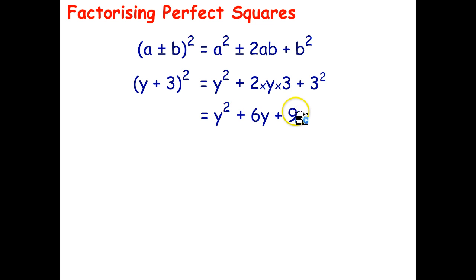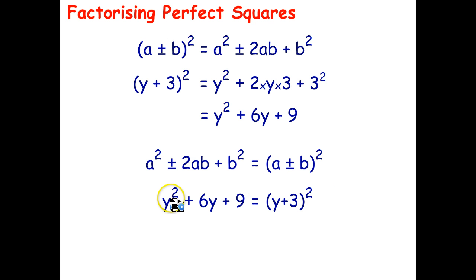So the question is, if we're given this expression here, how do we get it back to that? Well, what we have to do is start with that expression, which we have here, and turn it into the perfect square. So what we have to figure out is, if we're given the expression y squared plus 6y plus 9, how do we then turn that into y plus 3 all squared?